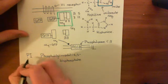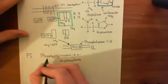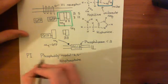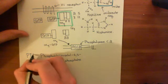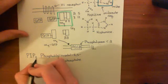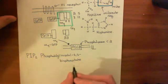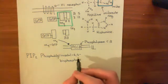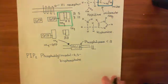The PI stands for phosphatidylinositol, and then the P2 stands for the fact that you've added two phosphate groups onto it — on the fourth and the fifth carbons.